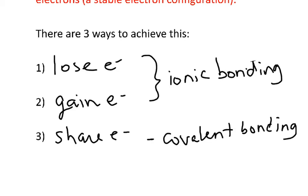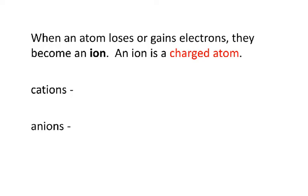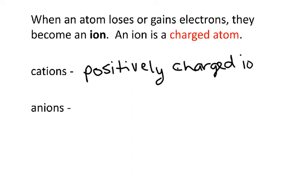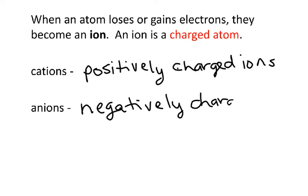When an atom loses or gains electrons, they become an ion — an ion is a charged atom. Now there are two types of ions. There's cations, which are positively charged ions. And then we have anions, which are negatively charged ions.